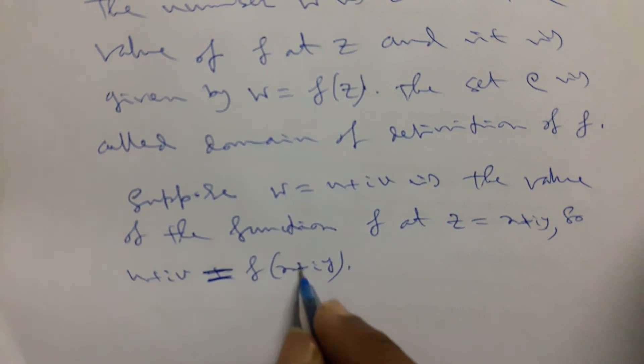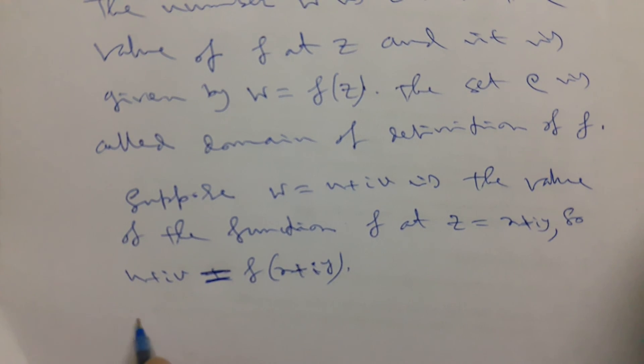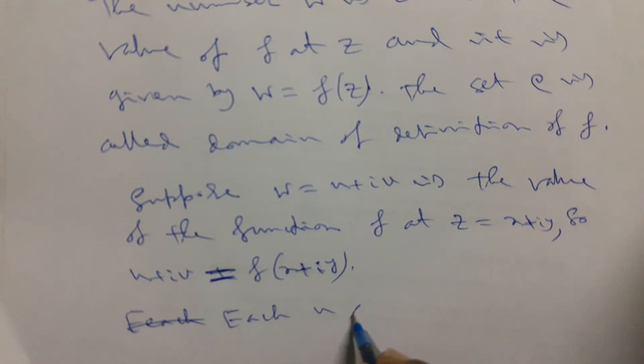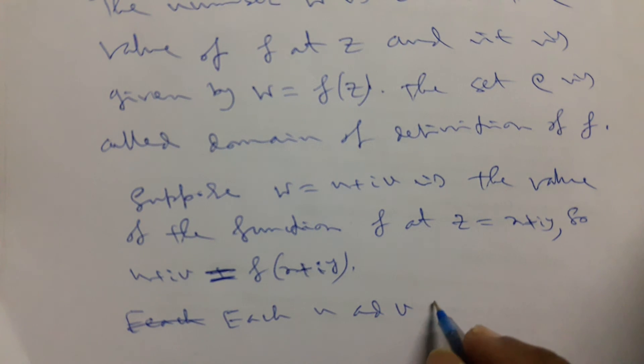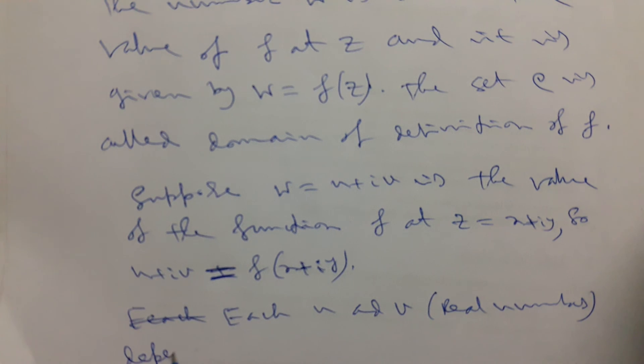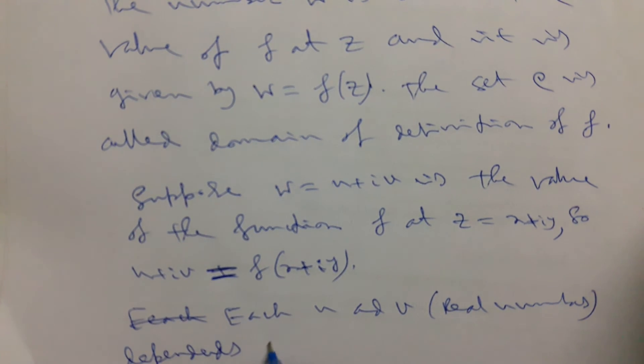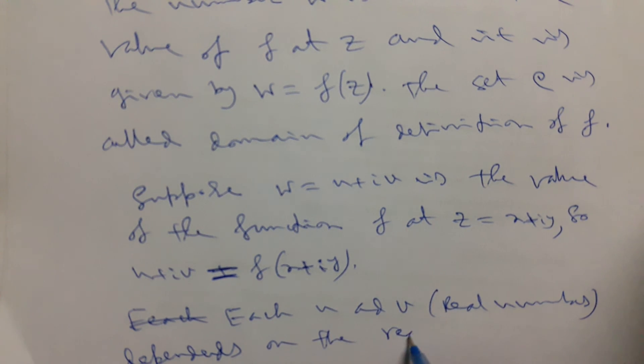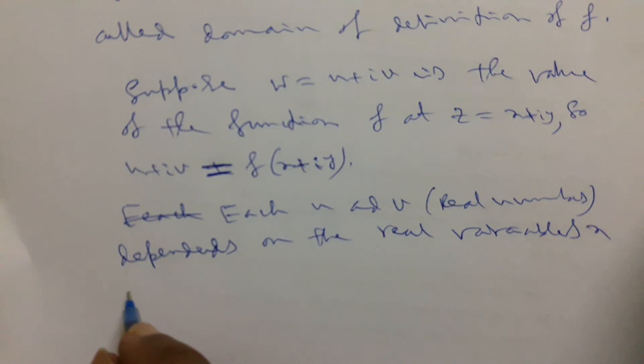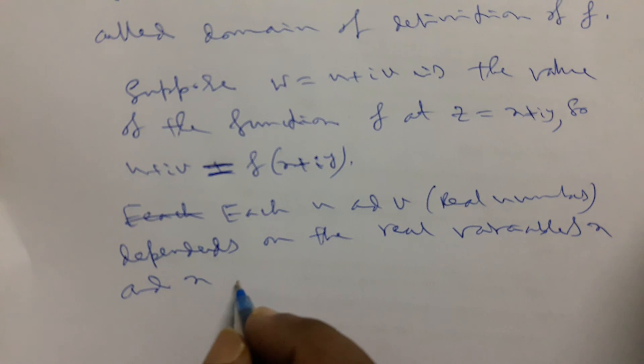Now each u and v are real numbers that depend on the real variables x and y.